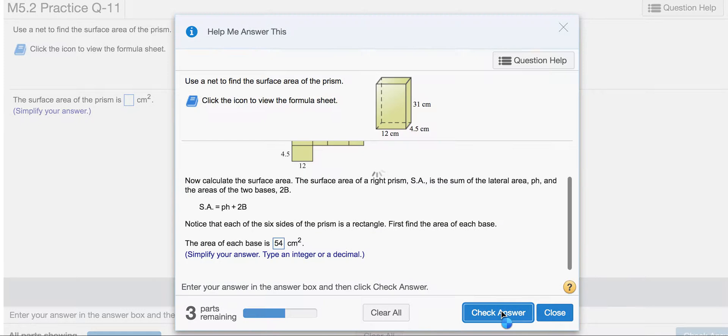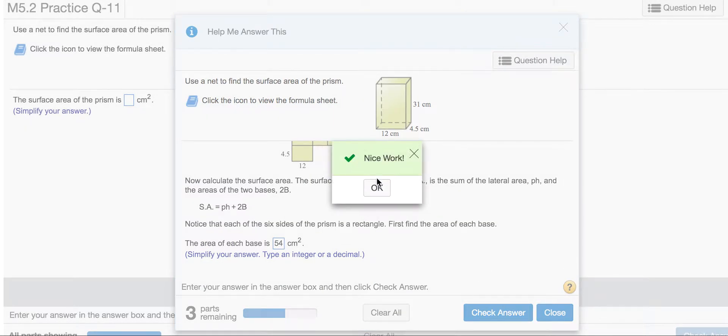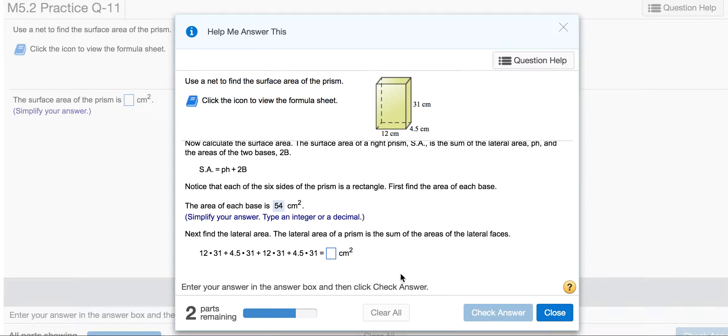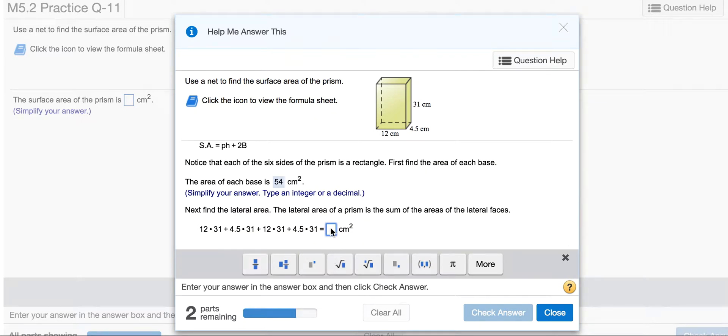Notice that each of the six sides of the prism is a rectangle. First, find the area of each base. The area is length times width, so 12 times 4.5 equals 54. That gives us the area of the bases.